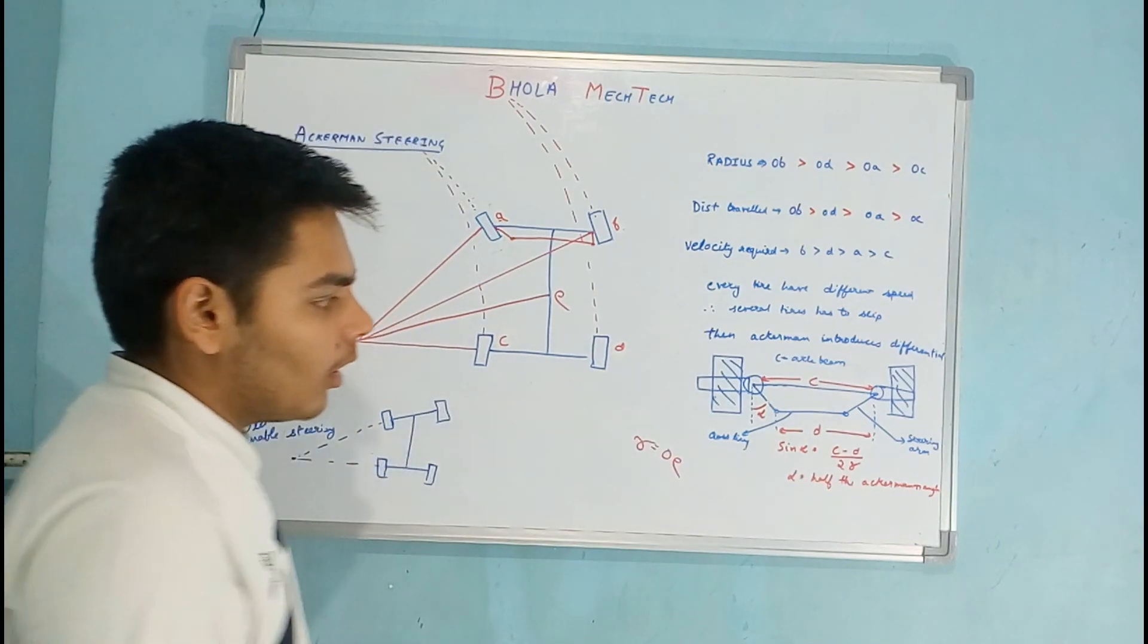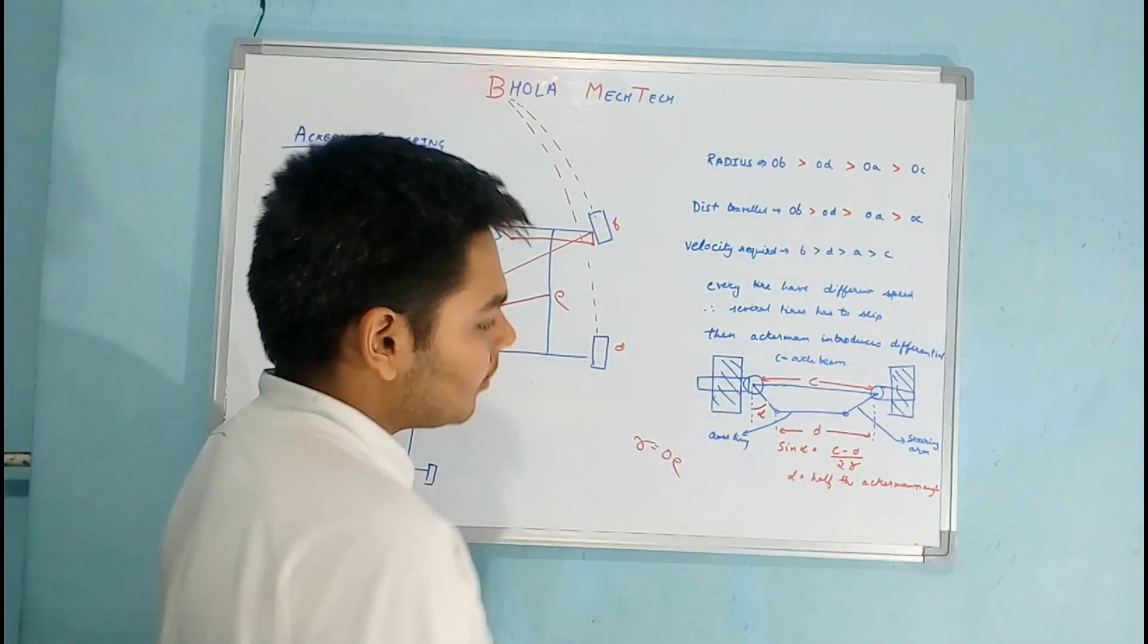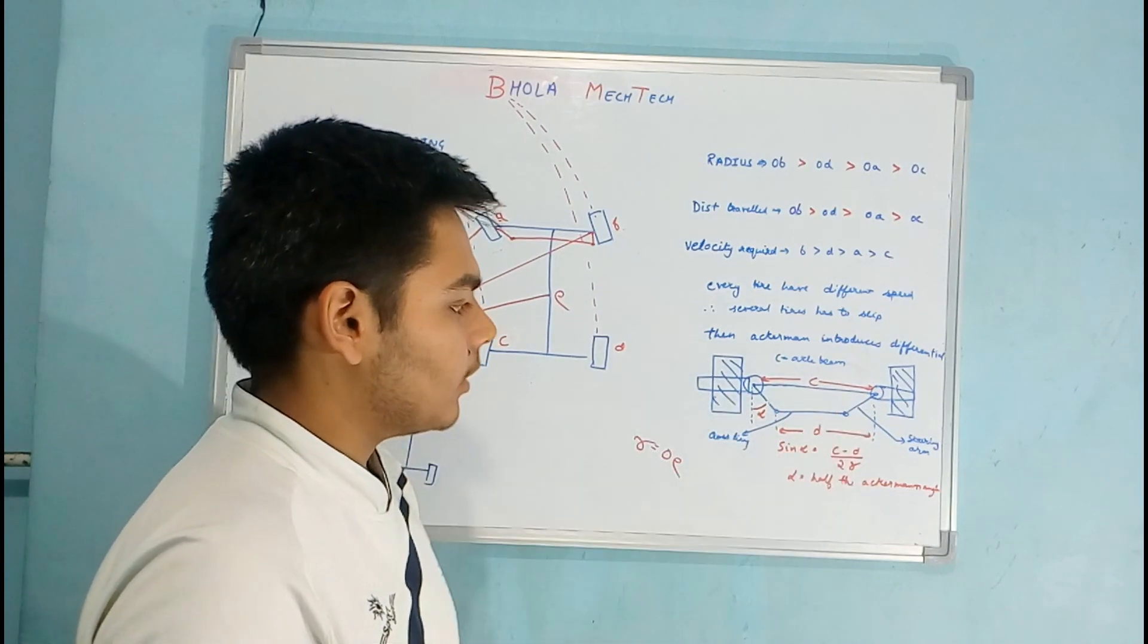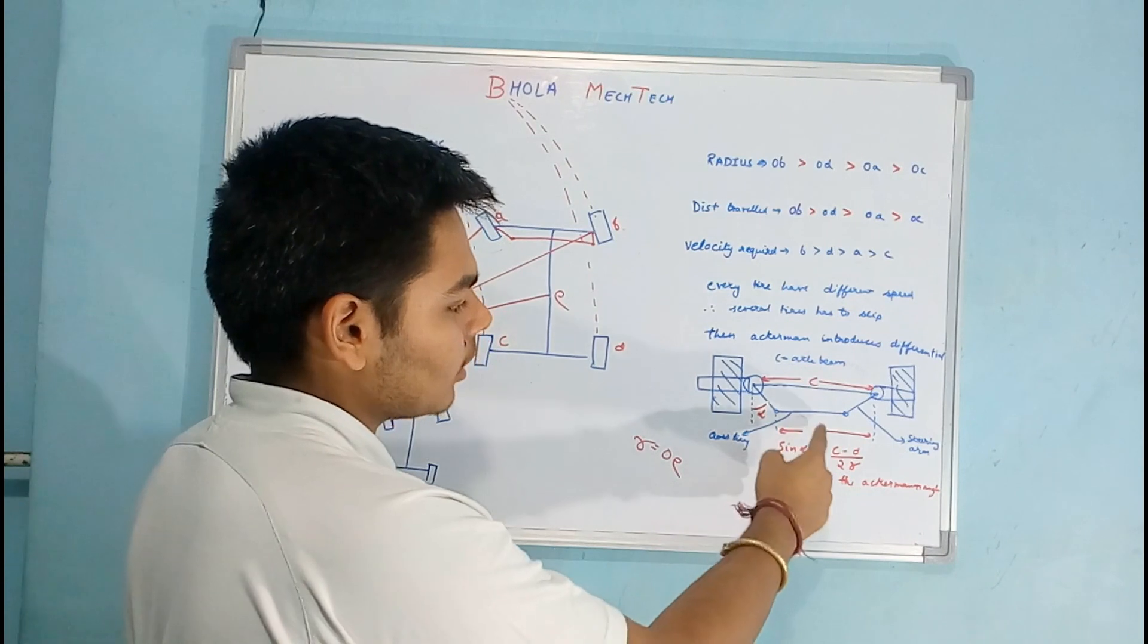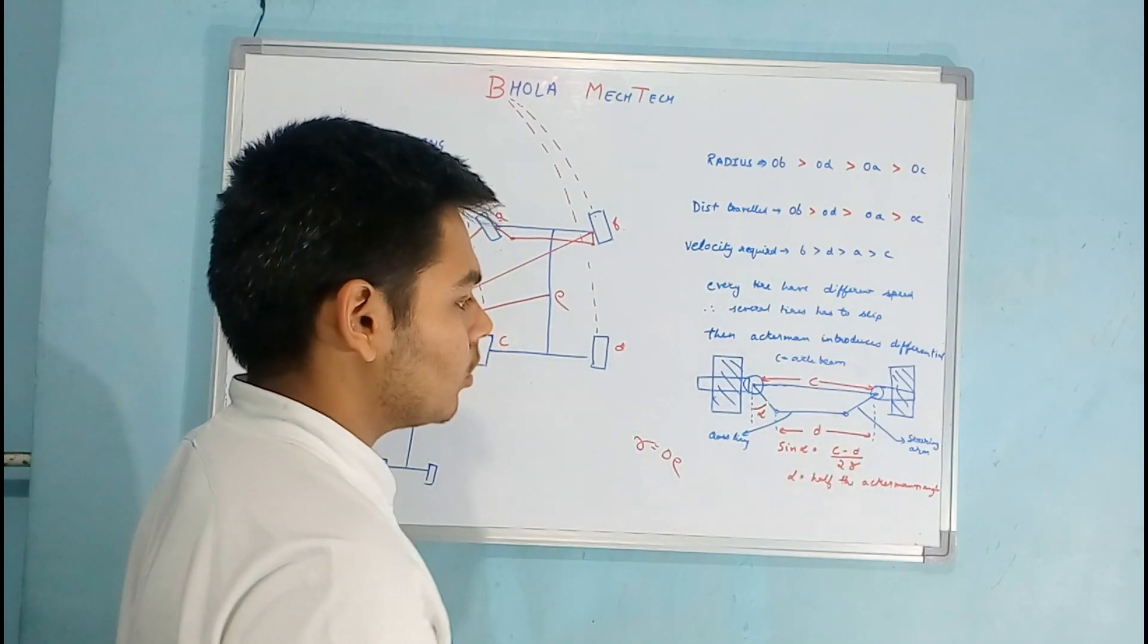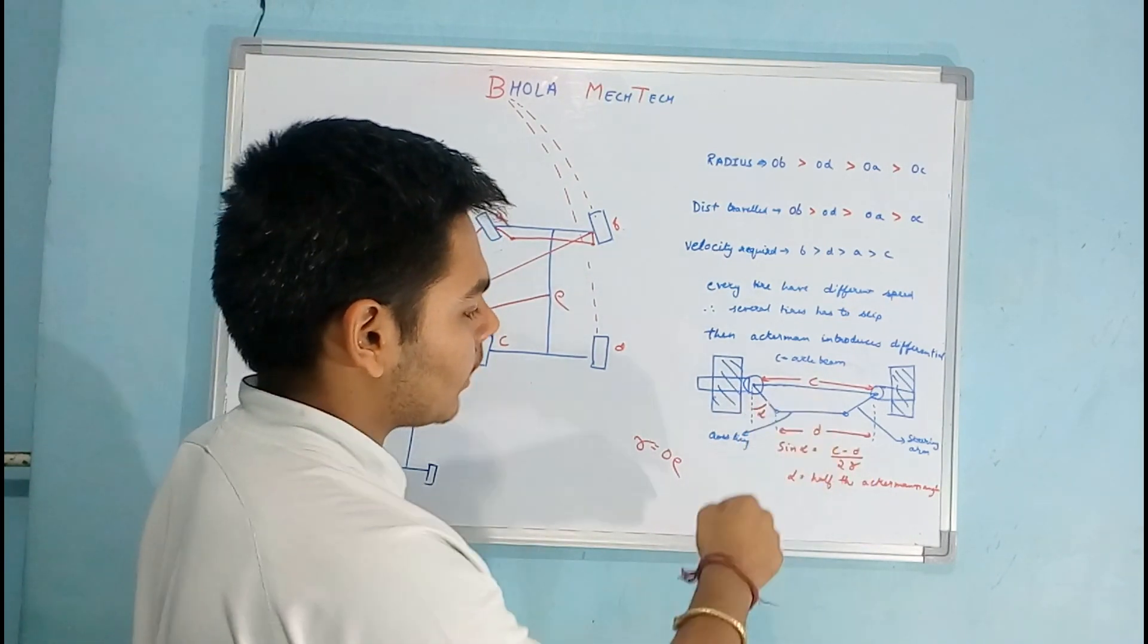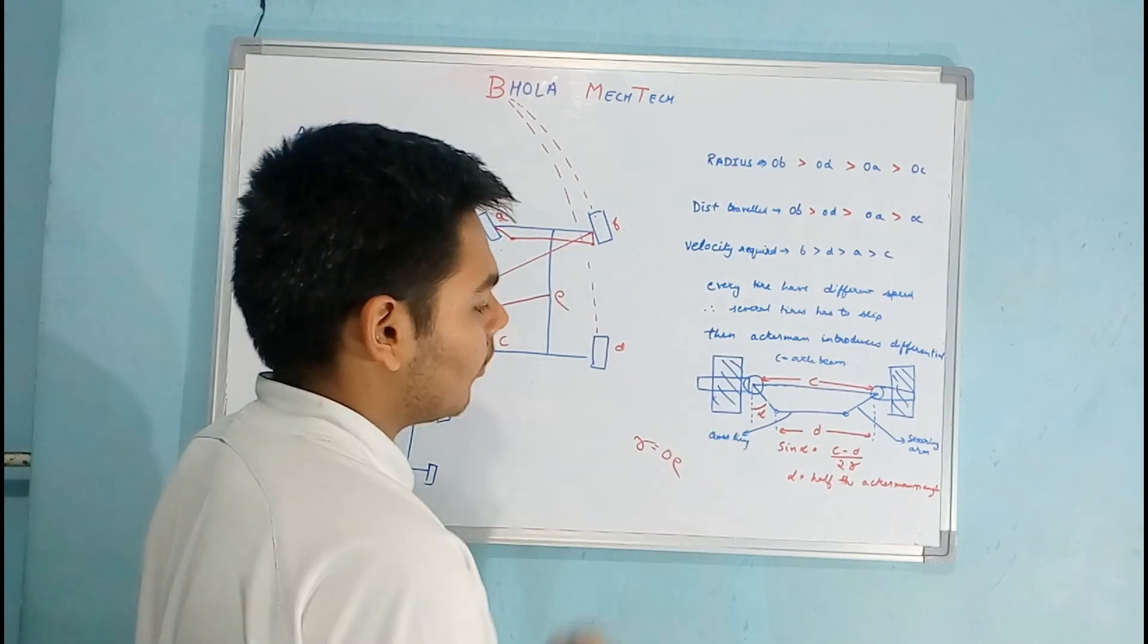In this geometry you can see there is a four-part link mechanism in which this is the axle beam, this is the crosslink, this is the steering arm. So there are two steering arms, one axle beam and one crosslink.